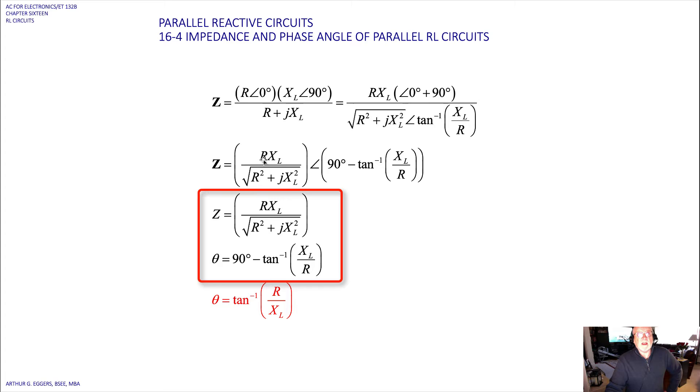So this becomes, then, the resistance times the reactance, we've got our sum in the denominator as the Pythagorean theorem, and then our angle, 90 degrees minus the inverse tangent, because we're taking the value out of the denominator, X sub L over R.